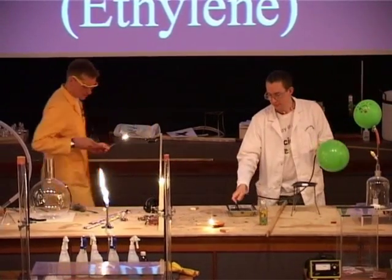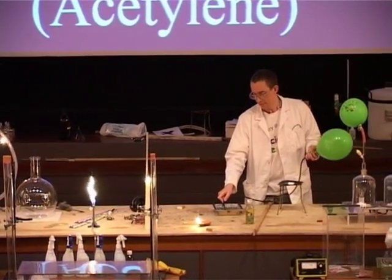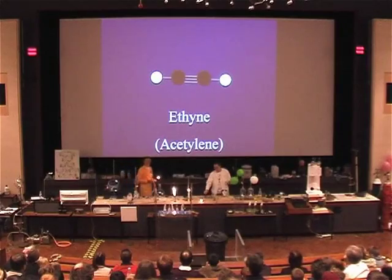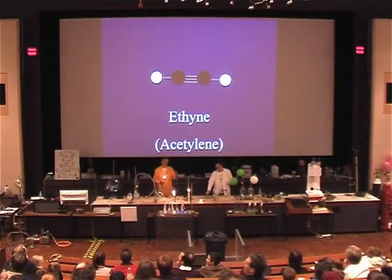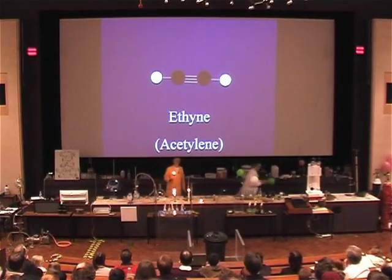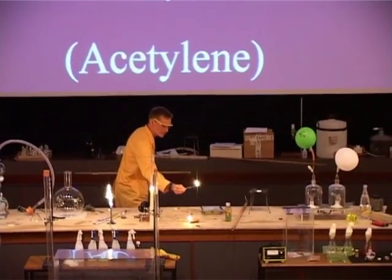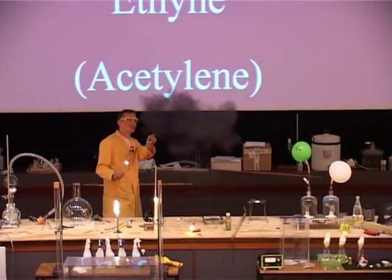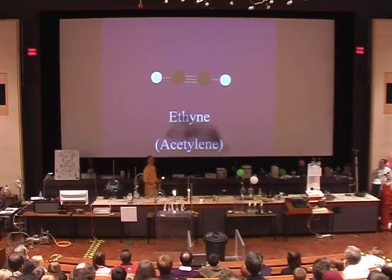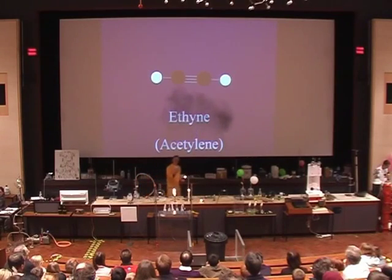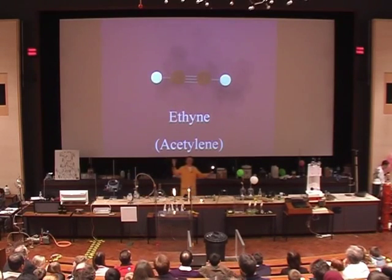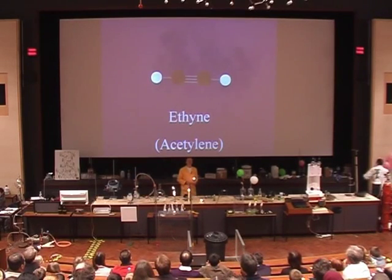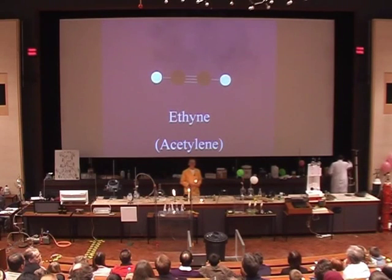Now the final gas we're going to use here is ethyne, and this has two carbons again, but only two hydrogens. Now look very carefully at this flame — if we have the lights up for this one please. Look at the soot. In this one there's very little hydrogen compared to the amount of carbon, and so now the whole lecture theatre is filled with this little black snow that's going to gradually come back down on top of us.